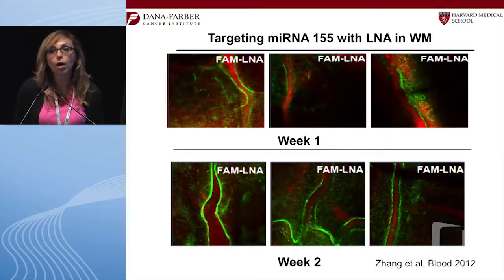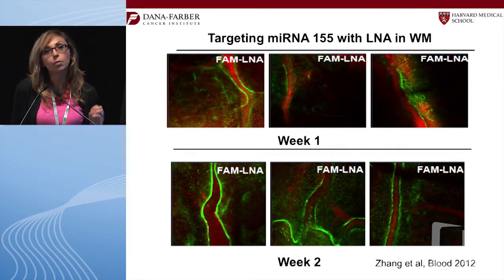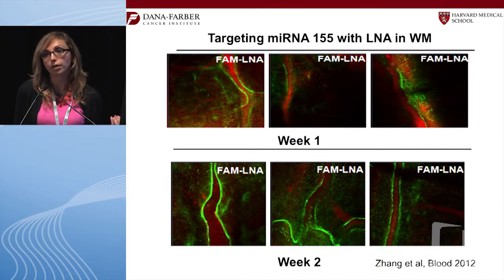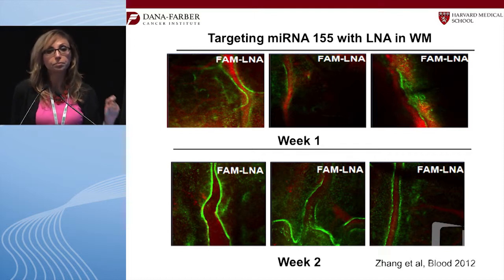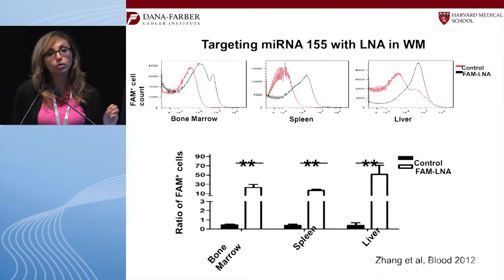Why care about miR-155 not only as a prognostic marker but as a therapeutic target? Because we can actually develop it as a therapy. One microRNA can target multiple genes simultaneously, which helps overcome single-pathway resistance. We developed a FAM-labeled locked nucleic acid anti-miR-155 in collaboration with Santaris in Denmark — now with Hexicon — which, when fluorescently labeled and administered to mice, was found in the bone marrow, liver, and spleen.